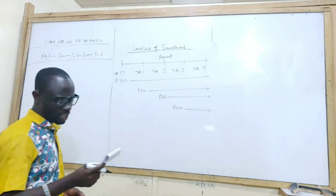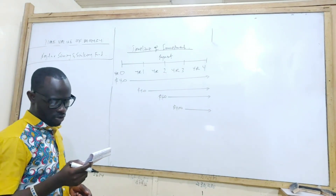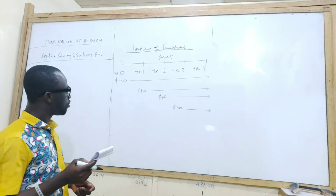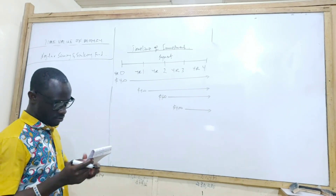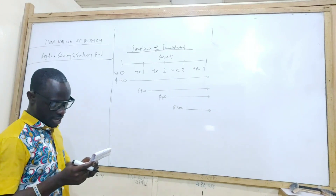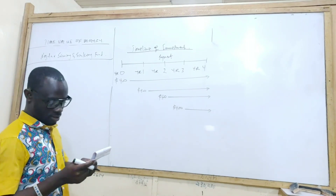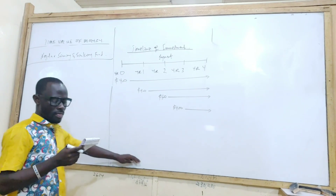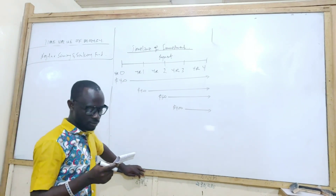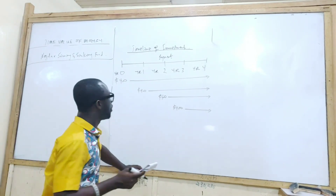How many payments is she making — five or four? After four years, it's one, two, three, four — four payments total. That's what we're looking for.